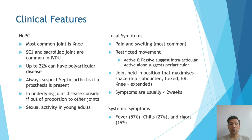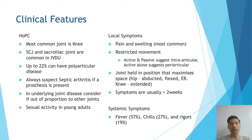The joint is usually held in a position that maximizes the space — so in the hip, that's an abducted, flexed hip with external rotation, and in the knee, that's an extended knee joint. Symptoms are usually present for less than two weeks. In regards to systemic symptoms, fever is by far the most common, but they can also have chills and rigors.